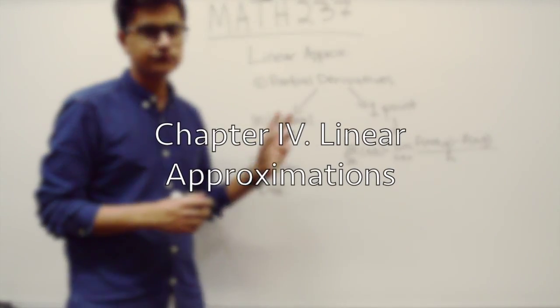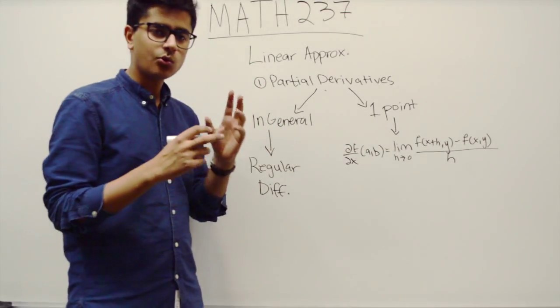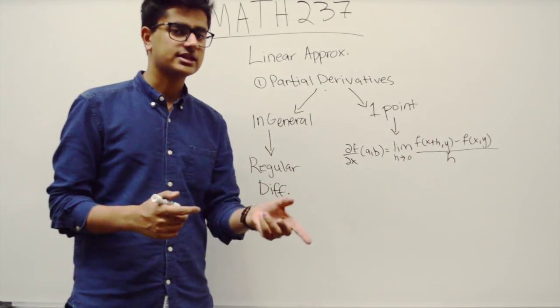The first part of chapter 4, which is linear approximations, is the idea of partial derivatives - keeping one of the variables constant while differentiating with respect to the other one.